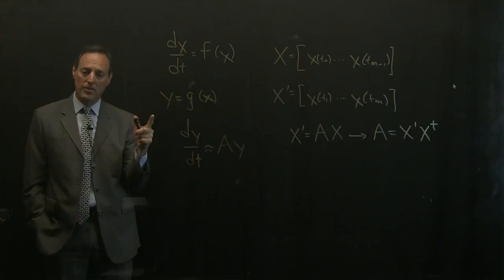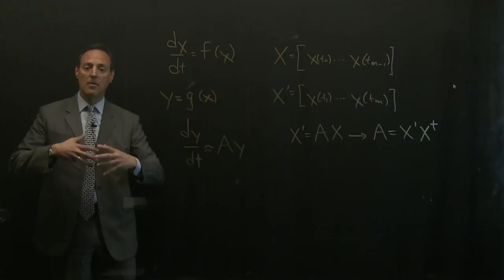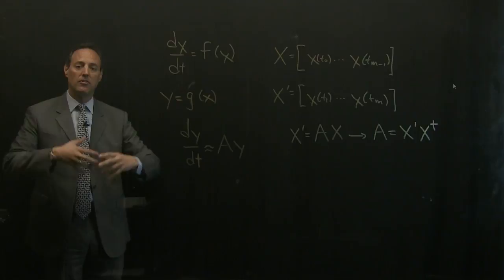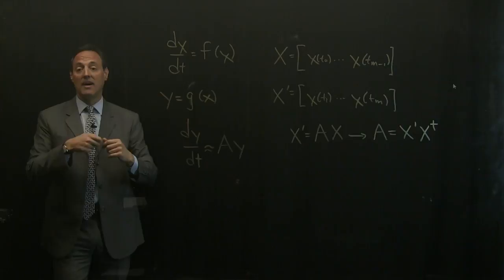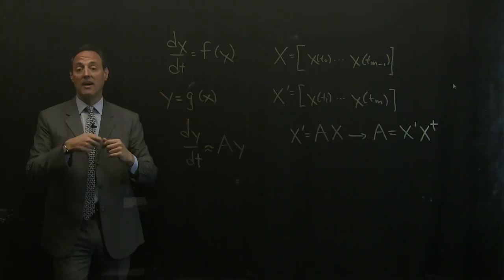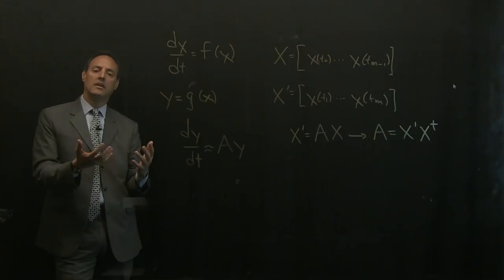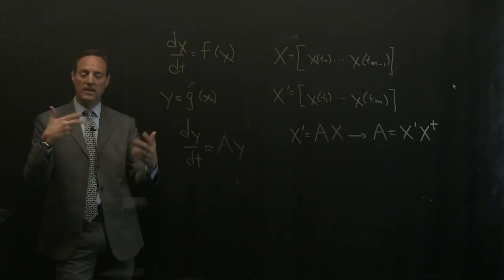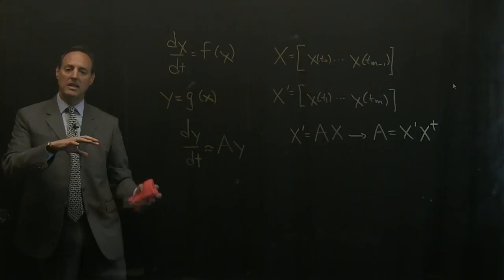One possibility is you can use what machine learning often does — the trick typically carried out in support vector machines — which is to project into some higher dimensional space. You could make g some projection into a higher dimensional space, and the hope is that it would be linear in that space. The problem is this becomes an exceptionally large system of equations. This idea is called extended DMD, and you can even use kernel methods for expanding to high dimensional space. But that is one possibility for figuring out how to build a linear space.